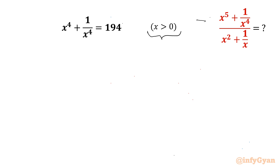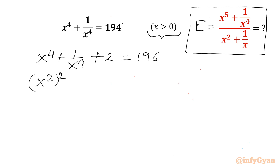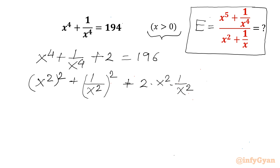Let's get started by considering the required expression equal to E. We have to calculate E. I will write our equation and add 2 to both sides: x power 4 plus 1 over x power 4 plus 2, which becomes 196. Now I can write x power 4 as x square whole square, and 1 over x power 4 as 1 over x square whole square. The 2 I can write as 2 times x square times 1 over x square, equal to 196.